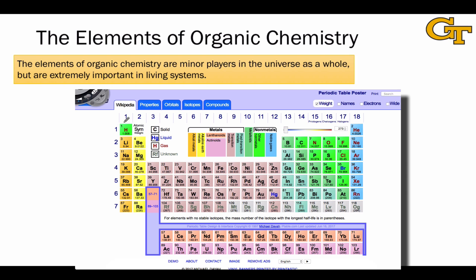The elements of organic chemistry are generally considered to be hydrogen and a select number of non-metals on the right-hand side of the periodic table, including boron, carbon, nitrogen, oxygen, and fluorine in the second row.